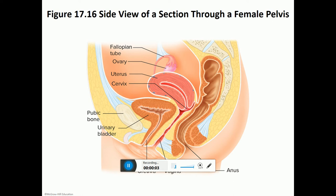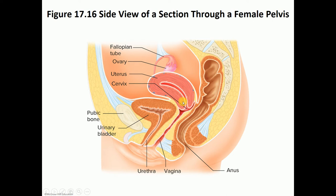The third and last part is going to discuss the physiology of the female reproductive system. Let's first introduce the different parts. We've got the vagina, there's the lower part of the uterus known as the cervix, and then there's the uterus, the fallopian tube or the ovarian duct, and the ovaries.